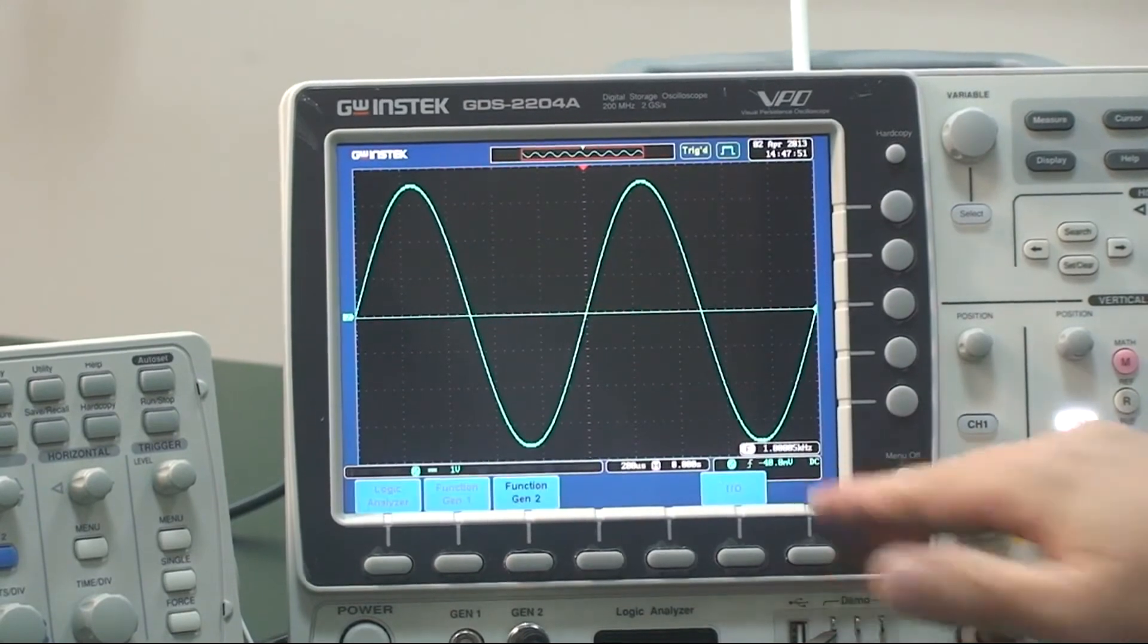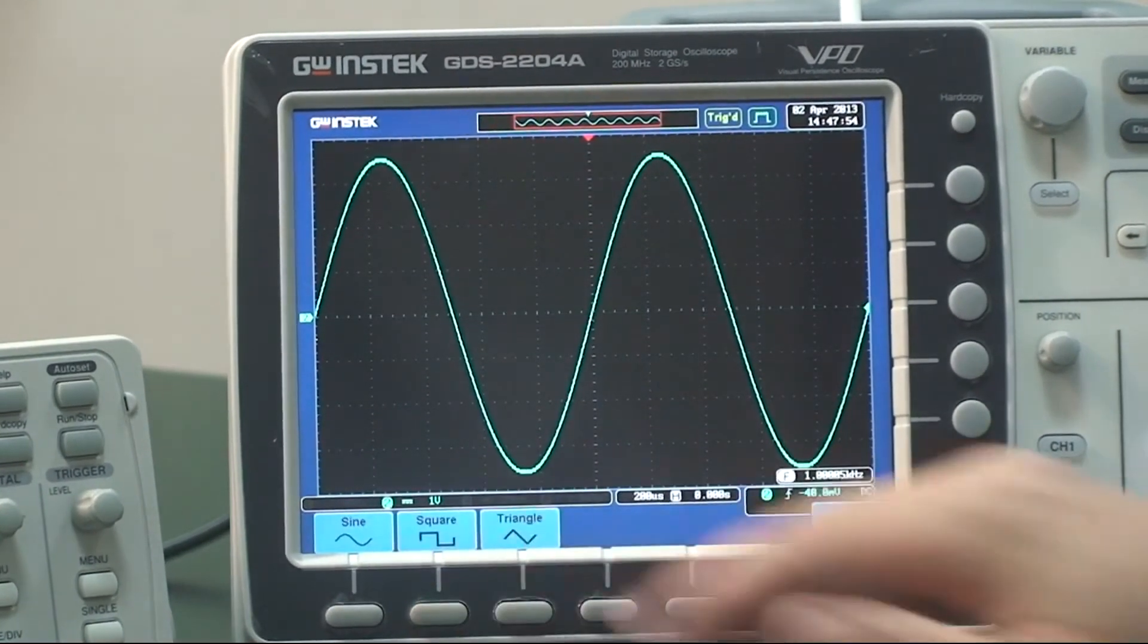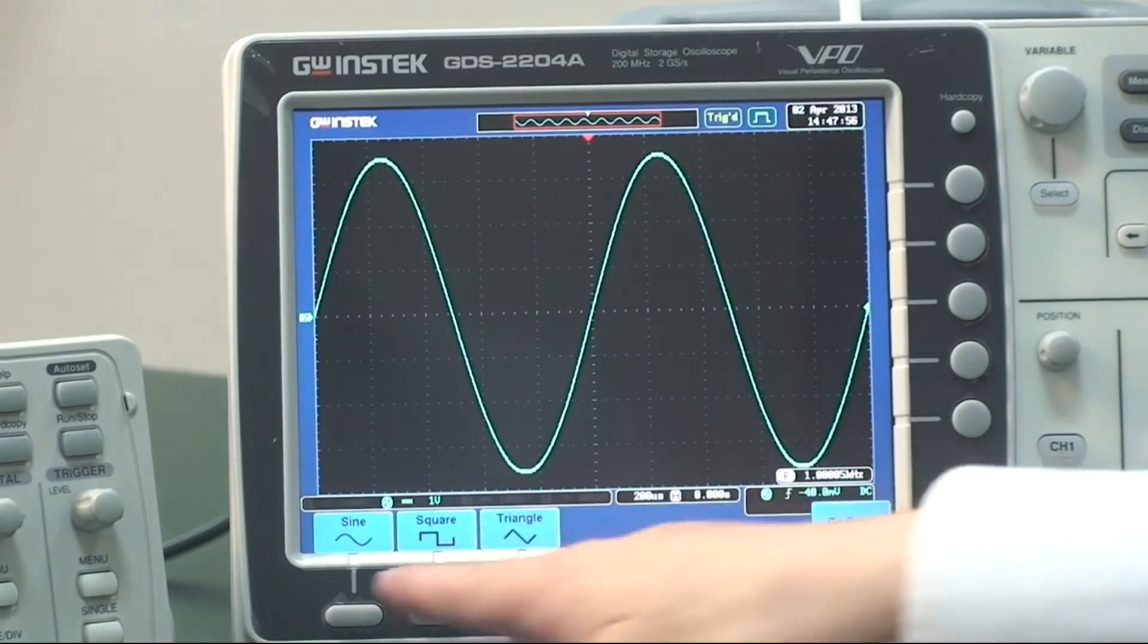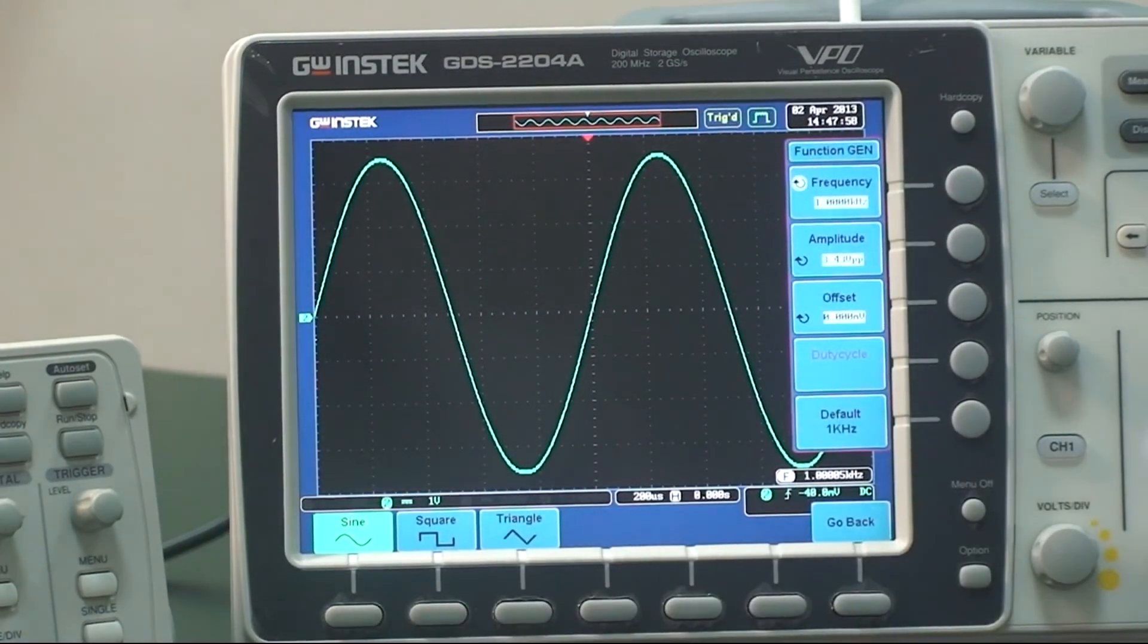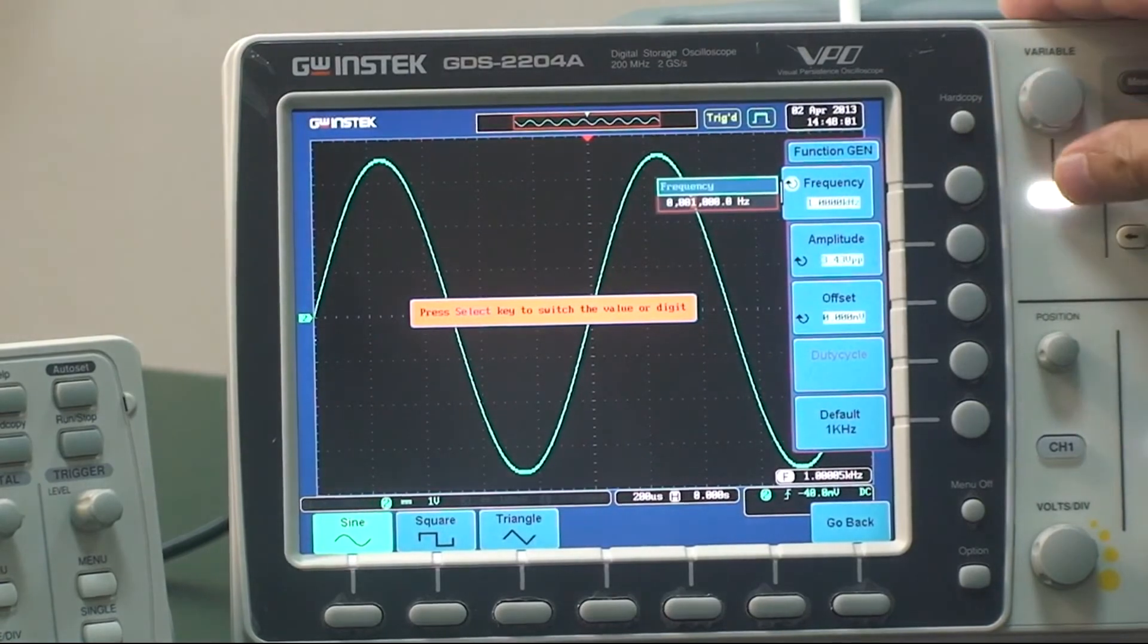Press option. Select function generator 2. Select sine wave. Let's set frequency to 1 megahertz.